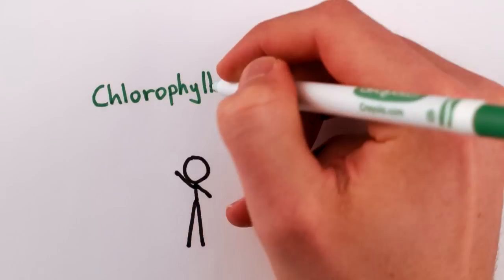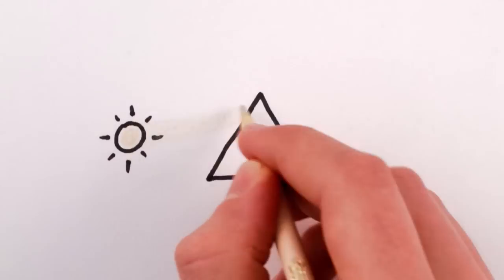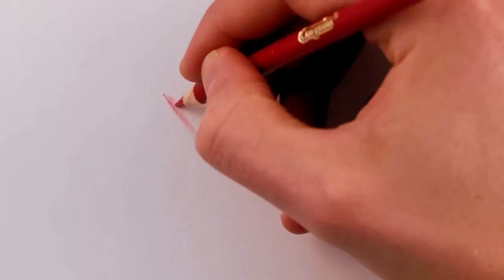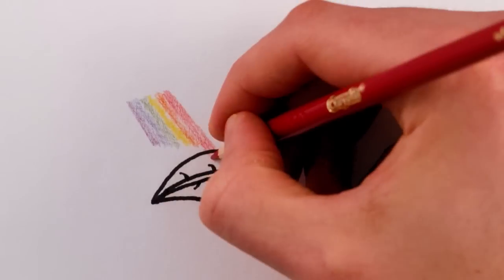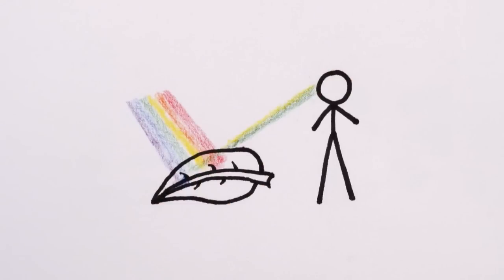But wait a second, doesn't the fact that chlorophyll is green mean that it's actually bad at absorbing green light? I mean, sunlight is composed of the whole rainbow of colors, each a separate wavelength, and the colors we see when we look at a leaf are the wavelengths that leaf isn't absorbing. That is, they're the ones that bounce off the leaf and reach our eyes.